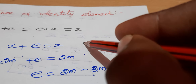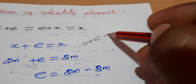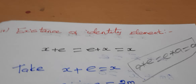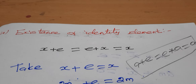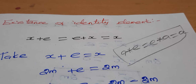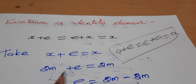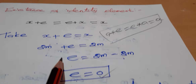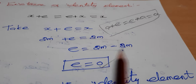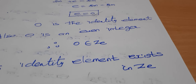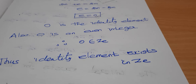Next is the identity property. We need a star e = e star a = a. Here, x plus e = e plus x = x. With x = 2m, we get 2m + e = 2m, so e = 0. Since 0 is an even integer, 0 is the identity element.